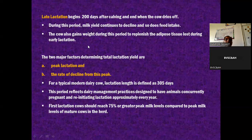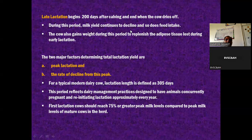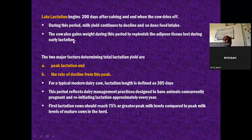Late lactation begins at 200 days and goes to 305 days. Milk yield continues to decline during this late lactation - there is a gradual decrease in milk production until it ceases, which we name as dry off. The cow also gains weight during this period to replenish the adipose tissue lost during early lactation. It fulfills and replenishes all those resources which were depleted and utilized during early lactation.